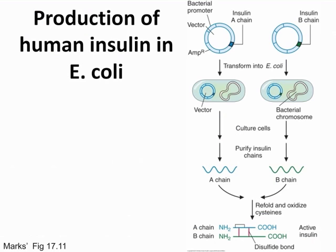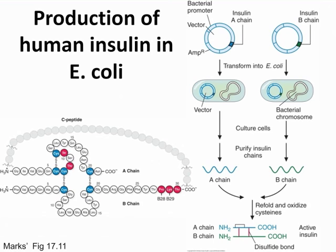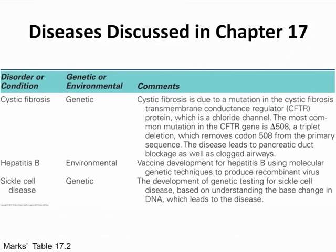Your last objective is knowing how human insulin is produced in E. coli. The key thing to know is that human insulin has an A chain, a B chain, and a C peptide. Finally, review the disease table in Chapter 17 — look at the disorders and the details about each one.